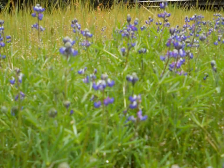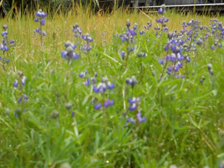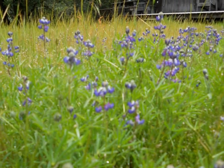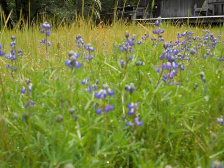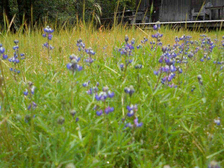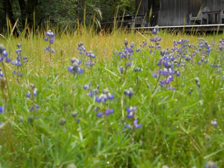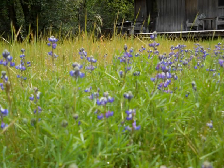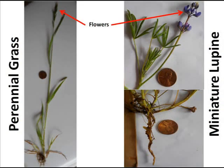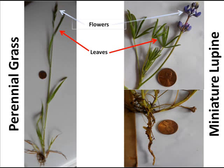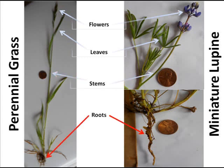This is why grocery stores are organized in a very specific way, and each product has its own label for identification. Plants may not have labels for identification, but they do have very specific structures that differentiate them from another species. In order to identify a plant, you must be knowledgeable of the main structures by which a plant can be identified. These main structures include flowers, leaves, stems, and roots.